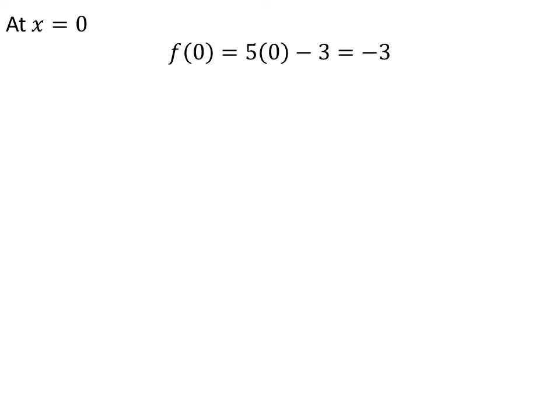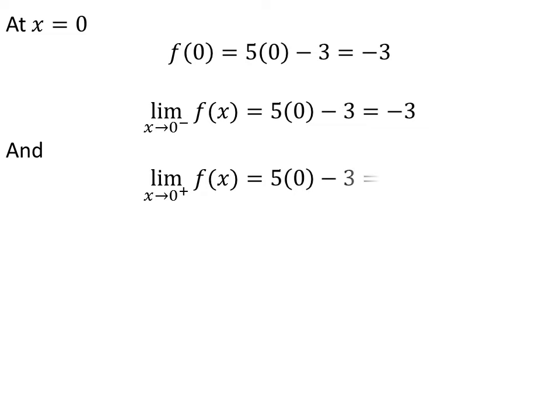Let us check the function 5x - 3 continuity at x = 0. The function is defined at x = 0 and its value is -3. Now, find the limit of the function when x approaches 0 from the left — the value of the limit is -3. Similarly, the right limit is -3.